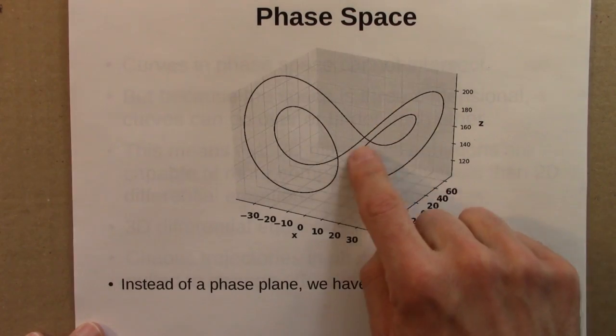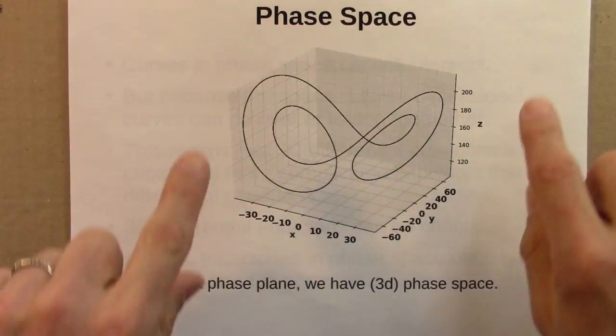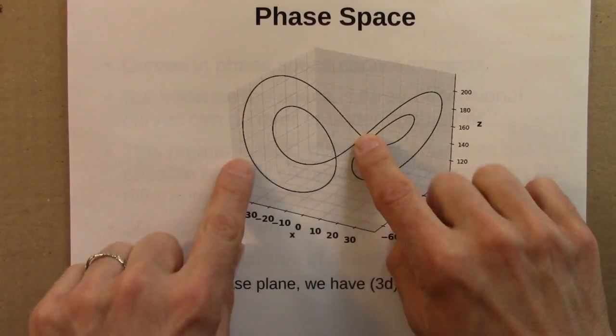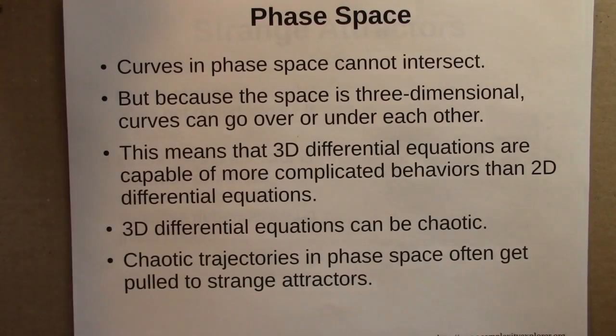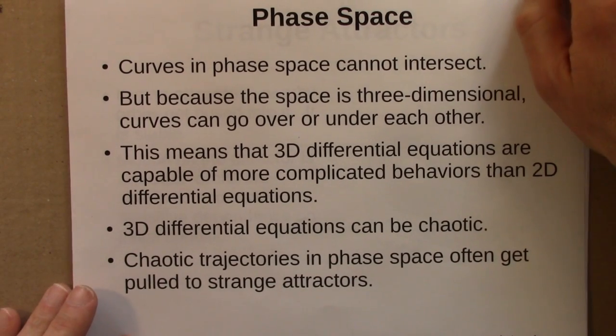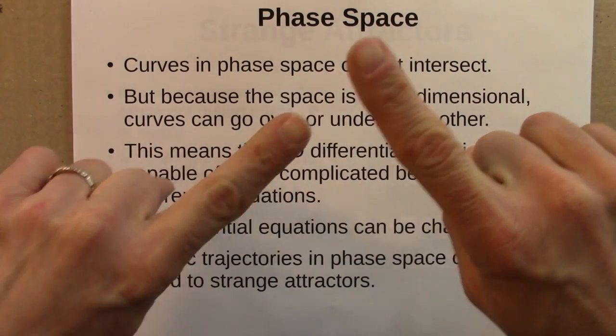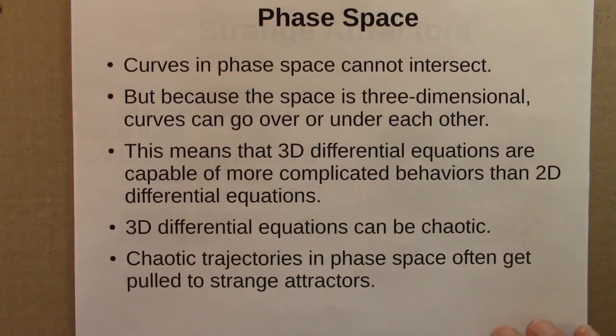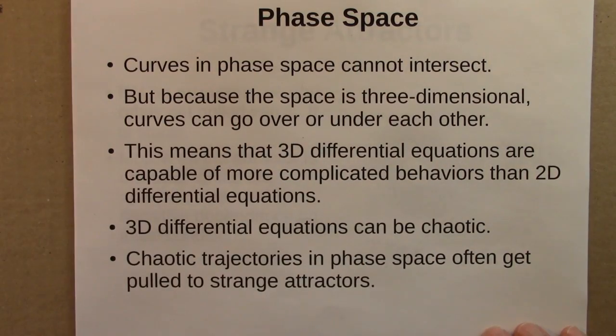It looks like the lines cross, but they don't. There's actually a space between them. This is, it looks like they cross because this is a two-dimensional surface trying to plot something in 3D. So, just a little bit more about phase space. Determinism means that curves in phase space cannot intersect. But because the space is three-dimensional, curves can go over or under each other. And that means that there's a lot more interesting behavior that's possible. A trajectory can weave around and under and through itself in some very complicated ways. And what that means, in turn, is that three-dimensional differential equations can be chaotic. You can get bounded, aperiodic orbits, and it has sensitive dependence as well.